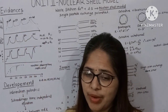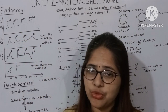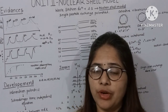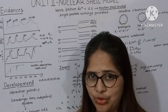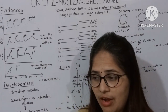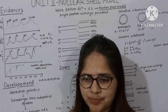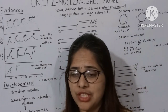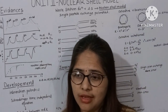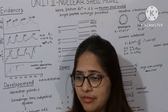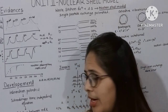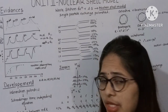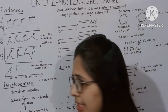Using these four evidences, scientists concluded that there must be a shell model, and due to that shell model, nuclei with nucleon numbers 20, 50, 82, and 126 get more stability. So the numbers 2, 8, 20, 28, 50, 82, and 126 are called magic numbers because they show more stability than neighboring nuclei.